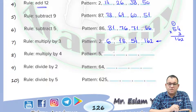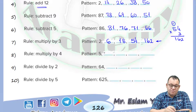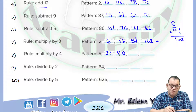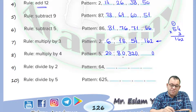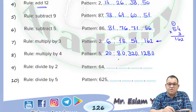Now we need to multiply by 4. I will start with 5. 5 times 4 equals 20. By multiplying by 4, just put 0, then 4 times 2 equals 8. Then put 0, and 4 times 8 equals 32. Then put 0 again. For 4 times 32: 4 times 2 equals 8, and 4 times 3 equals 12. So the answer will be equal to 1280.